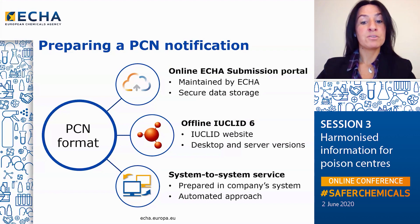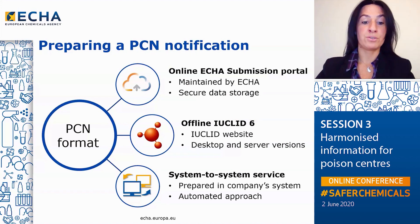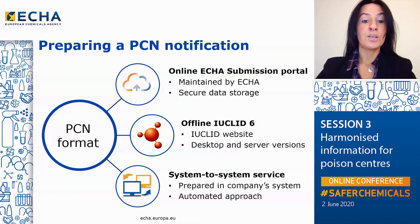The Poison Centers notification format structures the information on hazardous mixtures classified for health or physical hazards. The format is XML-based and defined by the requirements laid out in Annex 8 to the CLP regulation. Based on the Poison Centers format, there are three ways to prepare a Poison Centers notification: using the ECHA submission portal, using Euclid offline, or using a company-owned system.